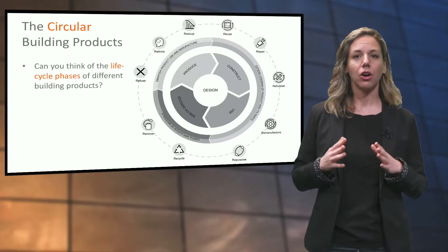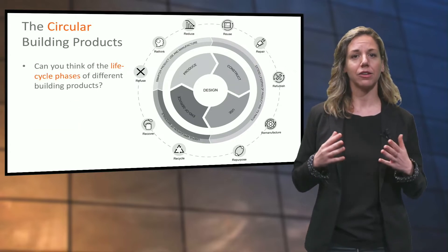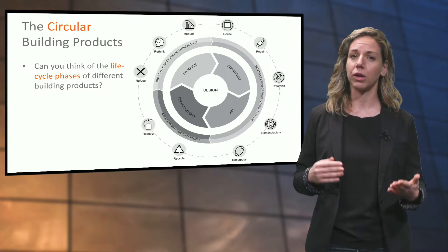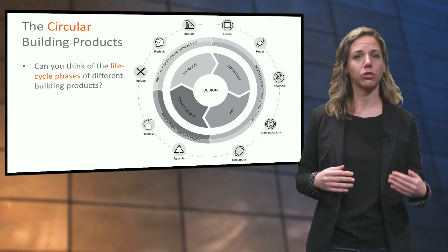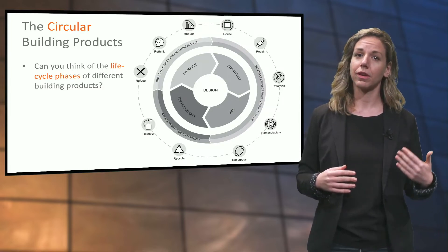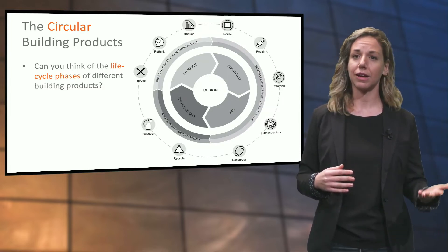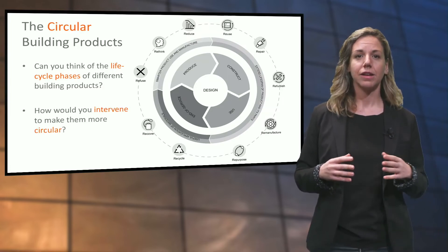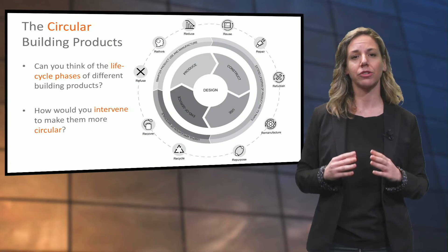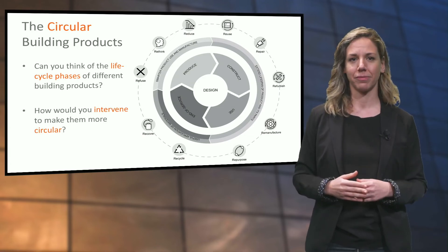Can you think of the life cycle stages of different building products, such as windows, doors, internal partitions, lamps, kitchens, cupboards, tiles? How would you intervene to make them more circular? Think about it.